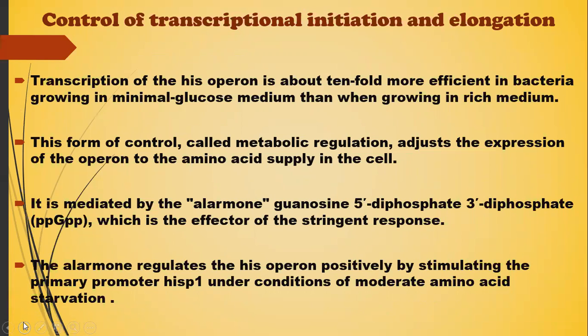Transcription of the histidine operon is about tenfold more efficient in bacteria growing in minimal glucose medium than when growing in a medium rich in glucose. This form of control is called metabolic regulation, and it adjusts expression of the operon to the amino acid supply in the cell. It is mediated by the alarmone, which is involved in the stringent response in bacteria, causing inhibition of RNA synthesis when there is a shortage of amino acids. This alarmone — guanosine 5'-diphosphate 3'-diphosphate (ppGpp) — is the effector of the stringent response and regulates the histidine operon positively by stimulating the primary promoter hisP1 under conditions of moderate amino acid starvation.